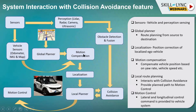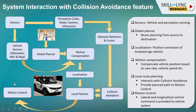After the global planner, there will be motion compensation, where the ego vehicle compensates its position based on yaw rate, vehicle speed, etc. Post motion compensation, there will be localization — meaning position correction of the ego vehicle. After localization, a local planner interacts with both localization and collision avoidance, planning a path that considers global planning, motion compensation, and localization while ensuring no risk of collision. Once that path is planned, it feeds into motion control, which applies the brake, engine control, or steering control.